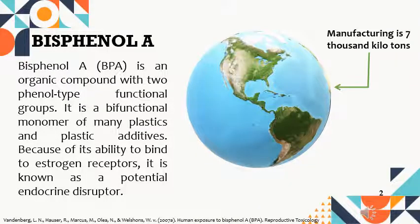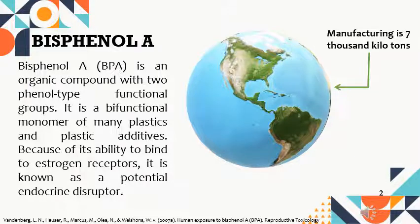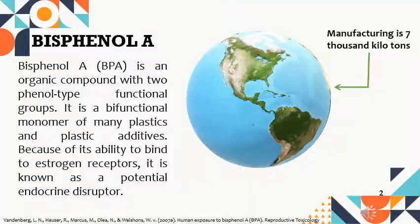I will start talking about the emerging pollutant bisphenol A. This compound is one of the most produced chemicals in the world with more than 7,000 kilotons worldwide. This compound was initially synthesized as an estrogen. With the passing of time, its high capacity to be a functional monomer of many plastics and additives was seen. Due to its initial origin, this compound is cataloged as an endocrine disruptor, where later you will see its other effects on human health.